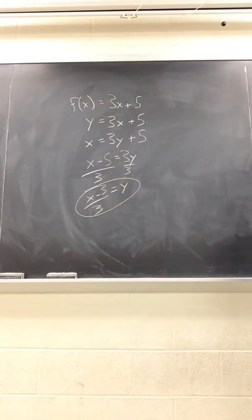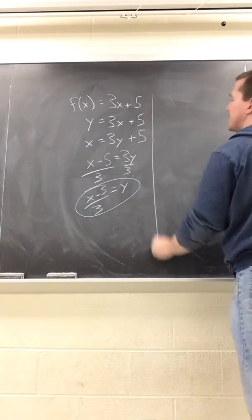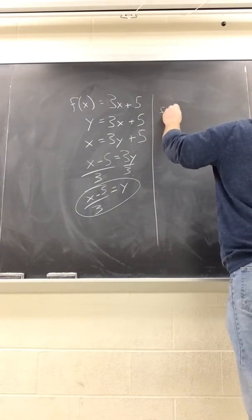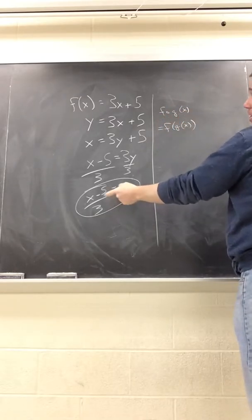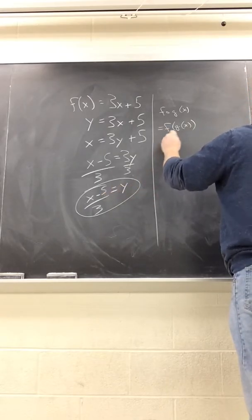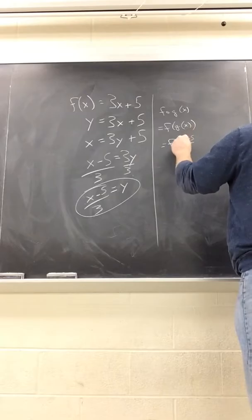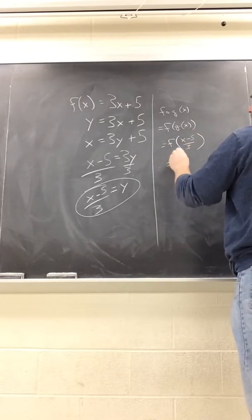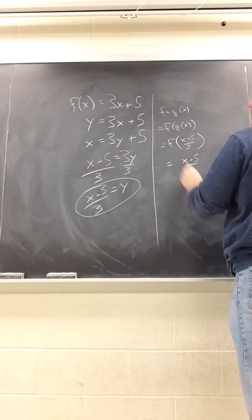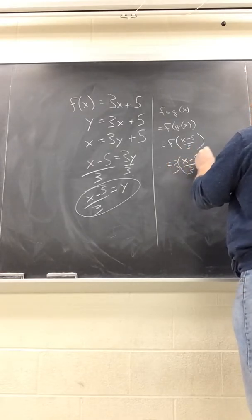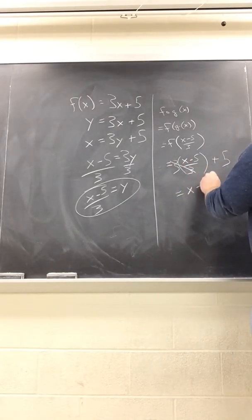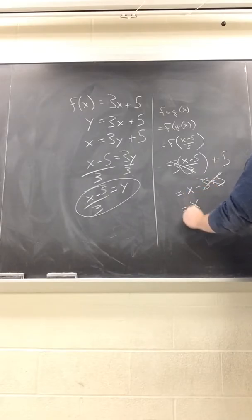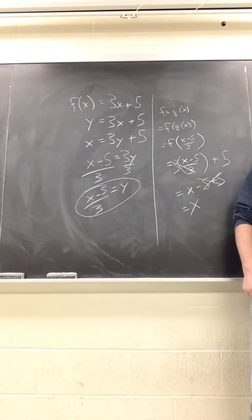If you wanted to check it really quickly, we'll just do the composition. You get f circle g of x, that's f of g of x. We just said this is my inverse right here, so that's f of x minus 5 over 3. What does f do? It takes whatever we plug in, multiplies it by 3, and then adds 5. Here the 3s will cancel because they're multiplied, and I get x minus 5 plus 5. Those cancel and I get x, so it's my inverse.